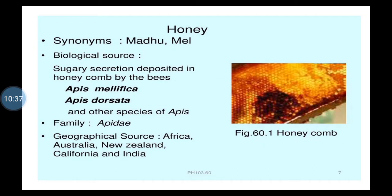That was the classification of pharmaceutical aids. Now we will start with the pharmacognostic study of 14 drugs which come under pharmaceutical aids. Beeswax has already been covered, so 13 drugs remain. Few drugs we will cover today and the remaining we will finish in the next lecture. The first one is honey; beeswax we have covered, so honey is the second one.